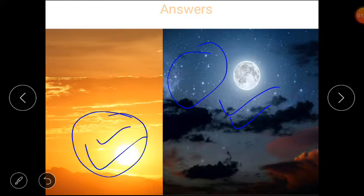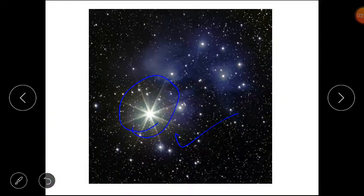The sun is yellow, the moon is silver. Stars look silver and white in color. We can see one sun, one moon, and many stars. Clear? Hamein ek sun nazar aata hai, ek moon and many stars. I hope you understand that.